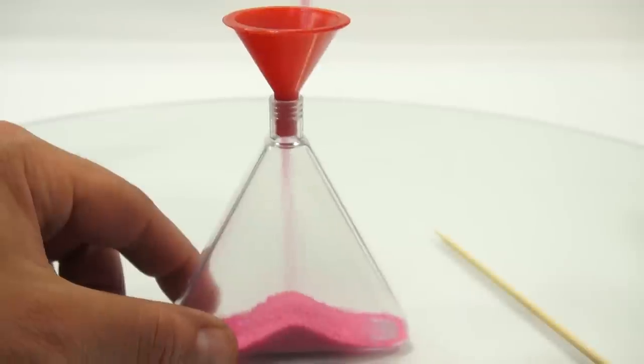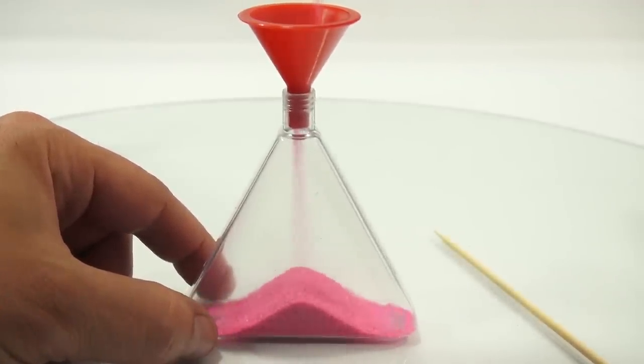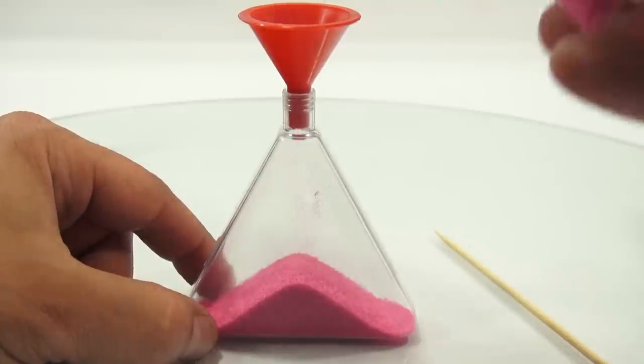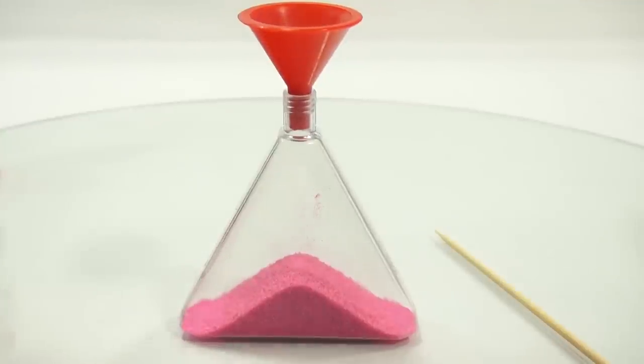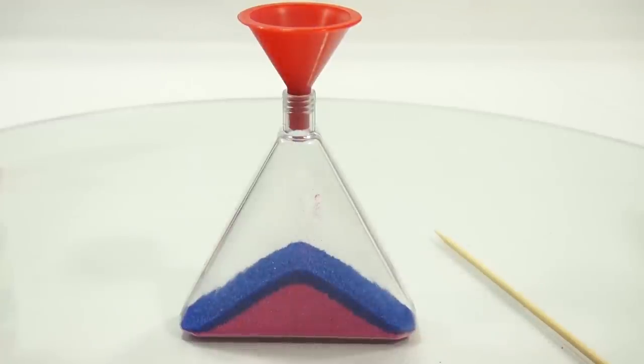I'm probably going to have glitter all over me and on the table and on my hands for weeks to come. There is layer number one. Oh, you want to see it going into the bottle? That's better. I think I'm going to leave it in that pyramid shape, so I'm going to wait till the pink covers the bottom edge. There we go, and then I'm going to go with blue.